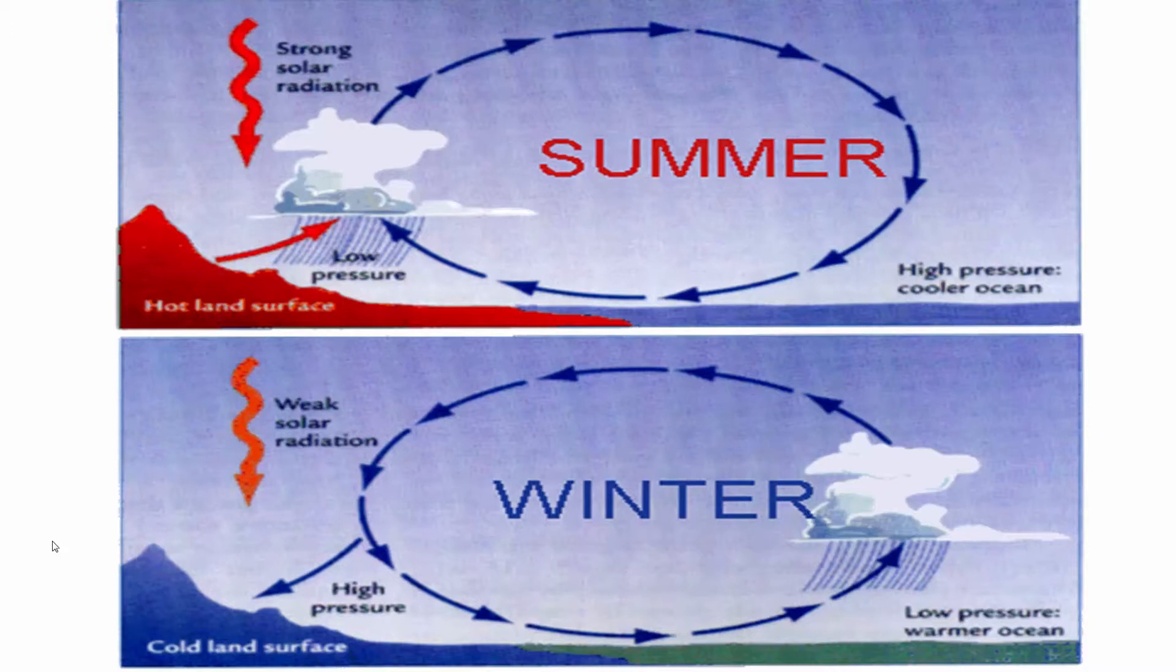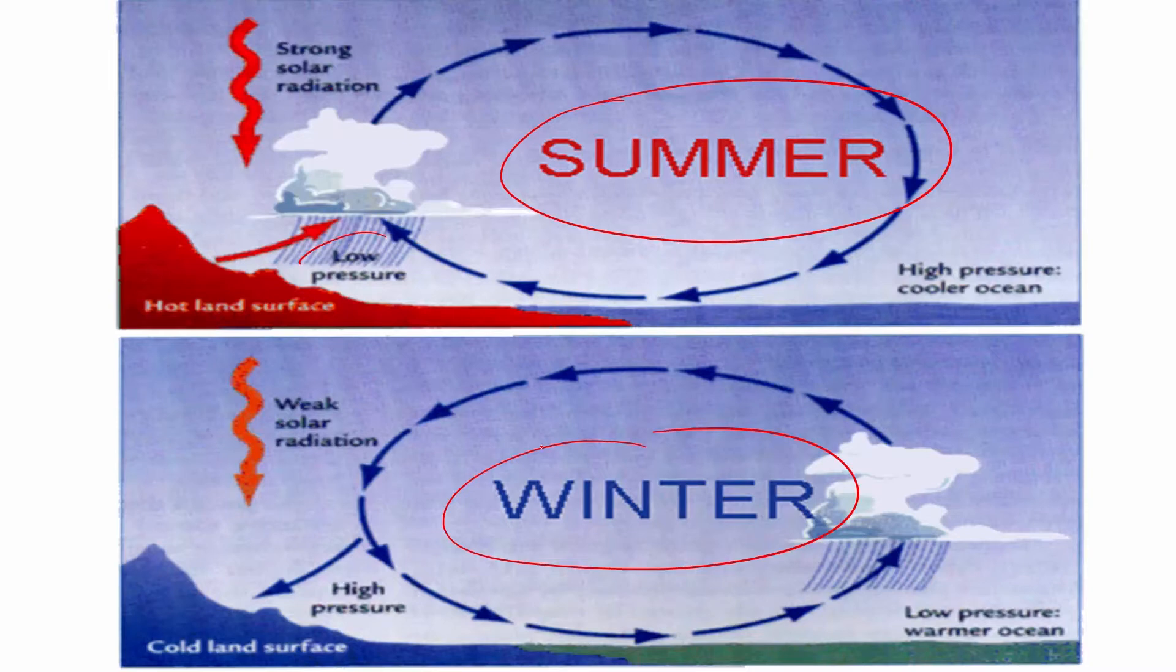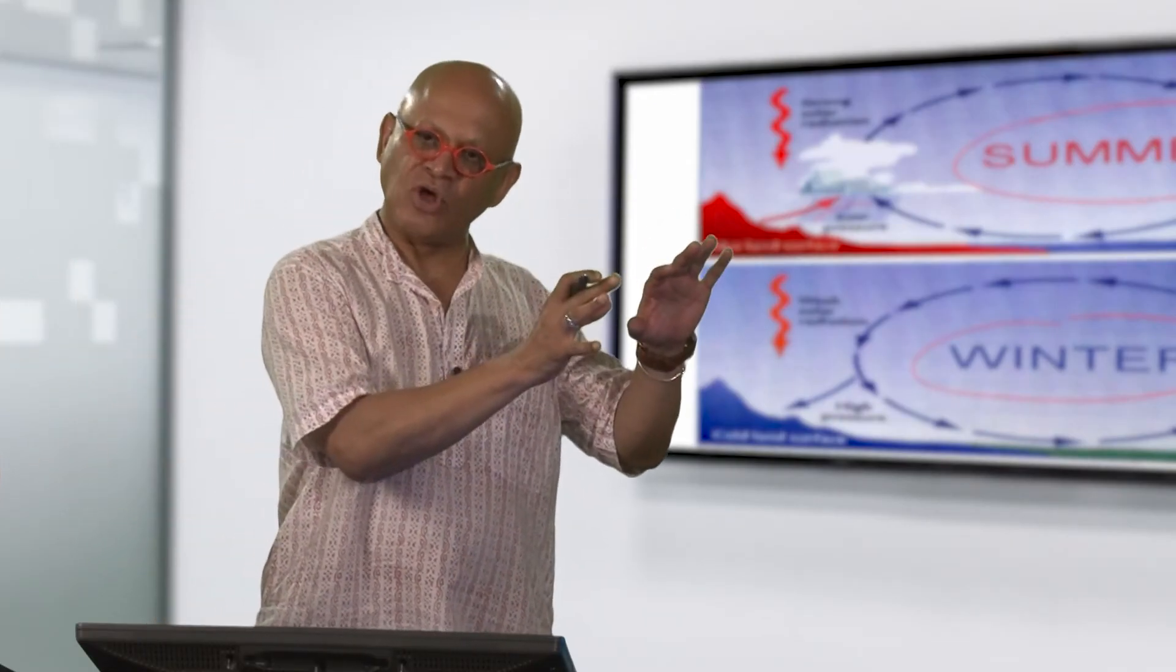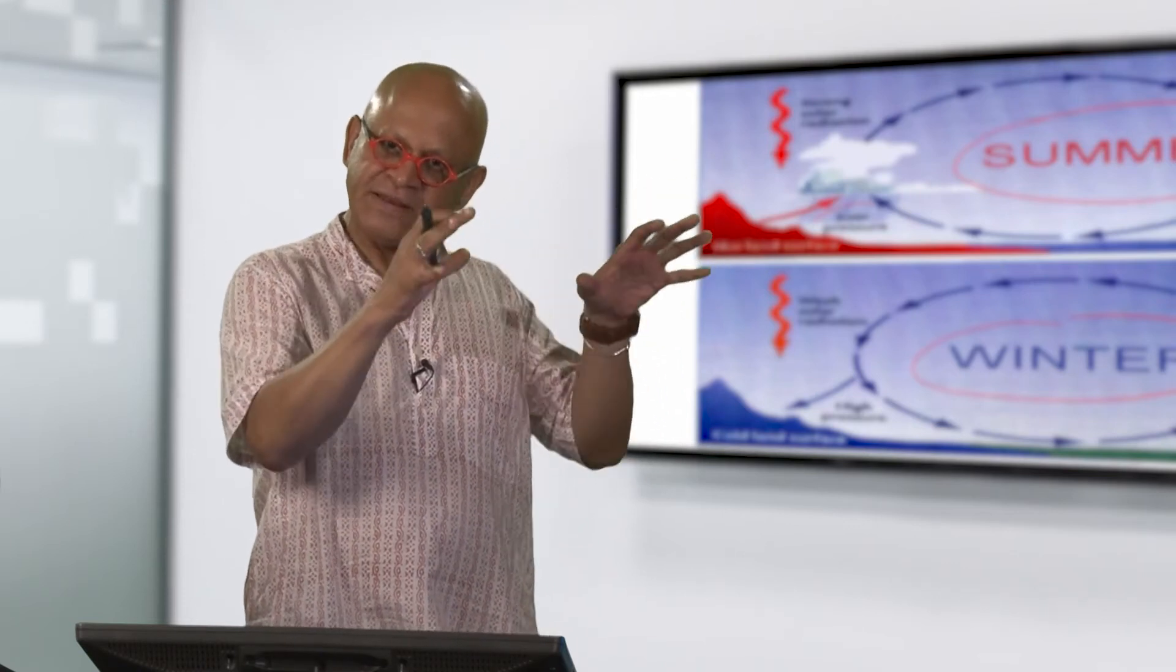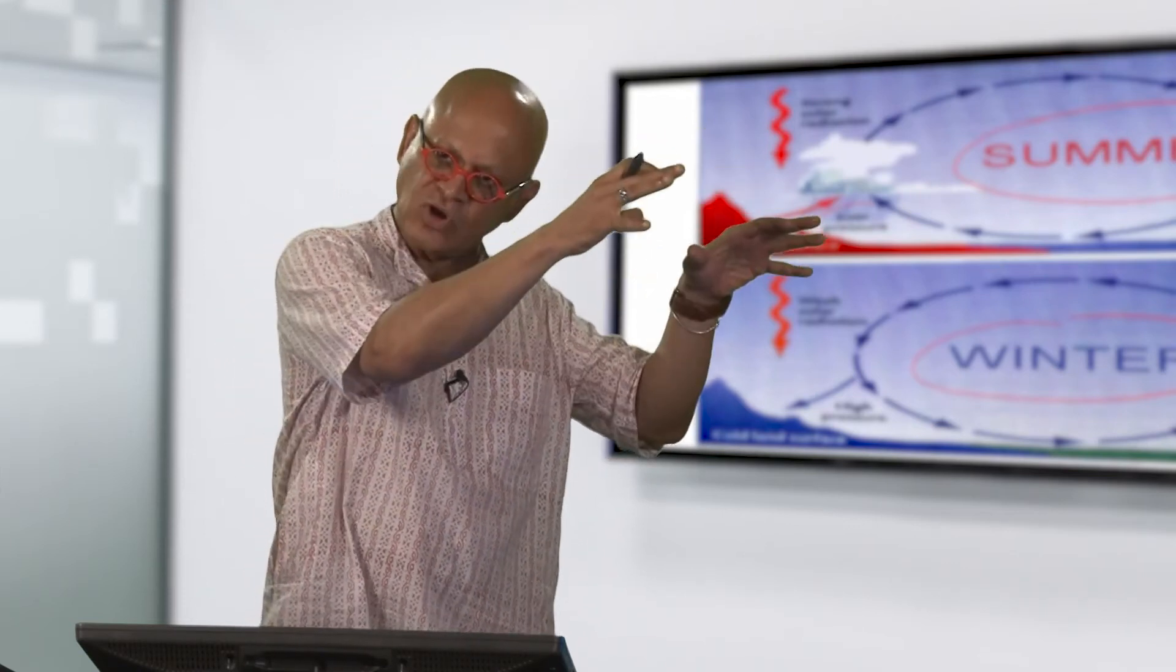So if you look at this figure here, here are the summer and winter seasons. So during the summer when the sun is crossing the equator and coming into the northern hemisphere, the Indian land mass is getting heated because the sun is towards the northern hemisphere.